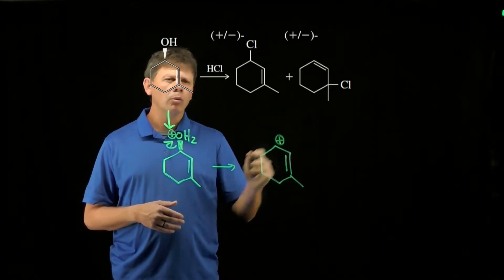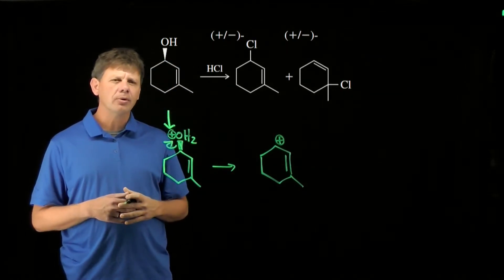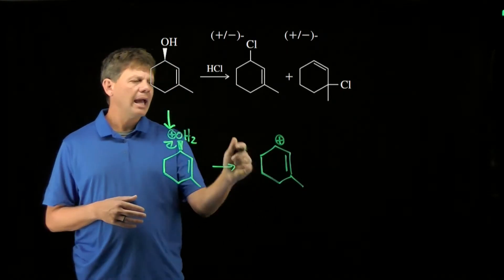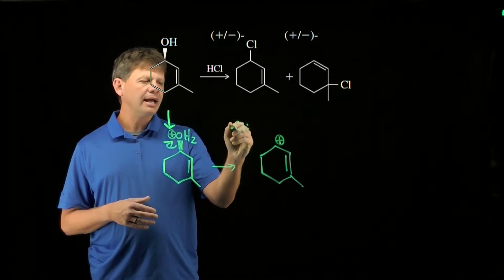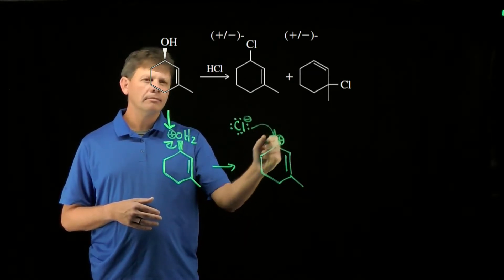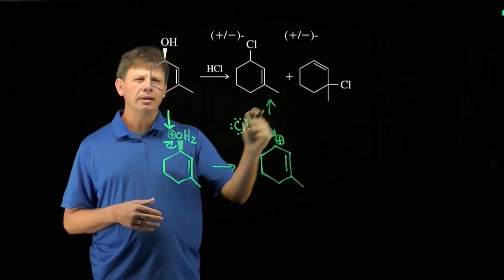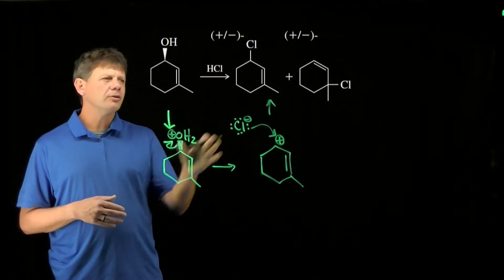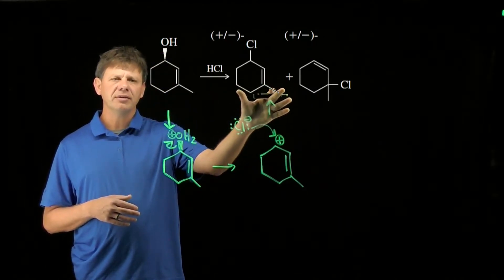Normally, we would go ahead and have that carbocation attacked by chloride. And in fact, if it were attacked, that would give us the product here. So we can easily understand the formation of this product.